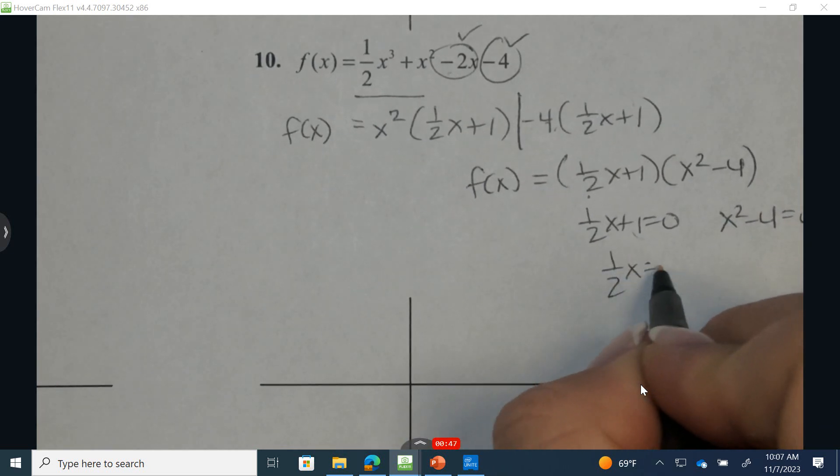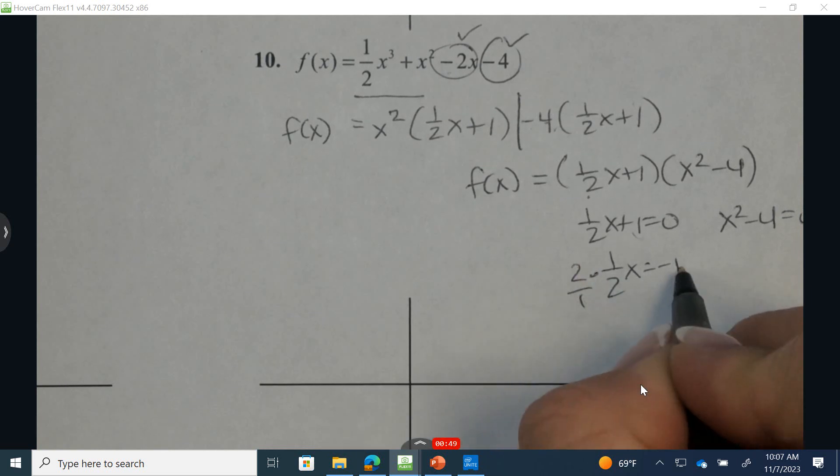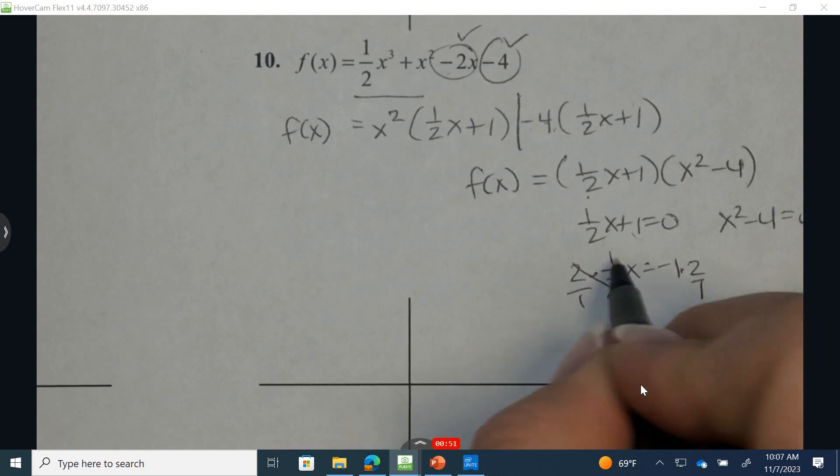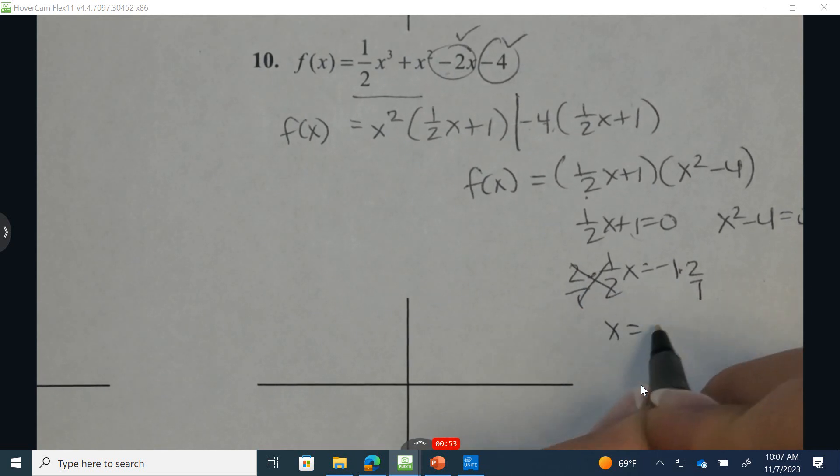Subtract 1 to the opposite side, multiply by the reciprocal, and I end up with x equals negative 2.